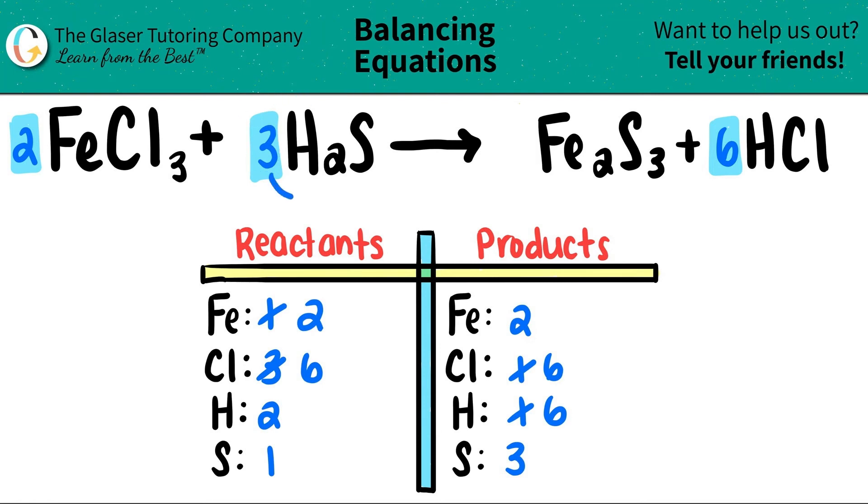So three times two, that's the six hydrogen. And then now I have three sulfurs. There is one here. So three times one is just three. And looky there. By balancing the hydrogen, we actually balance the sulfur. And now everything is balanced.